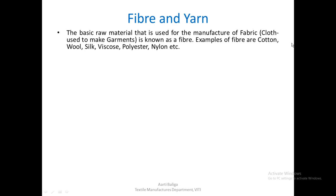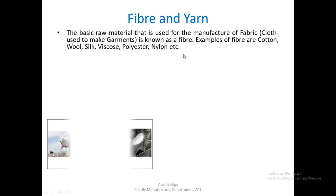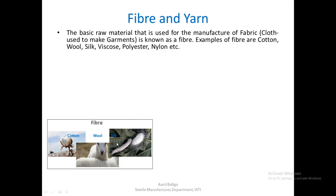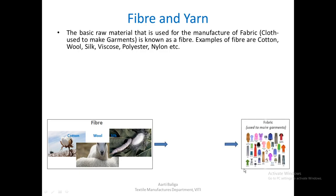Examples of fibers are cotton, wool, silk, viscose, polyester, nylon, etc. These are images of the origin of some basic natural fibers. Cotton comes from the plant, wool comes from sheep, and silk from the silkworm, which are used further to produce fabrics and ultimately to make garments.